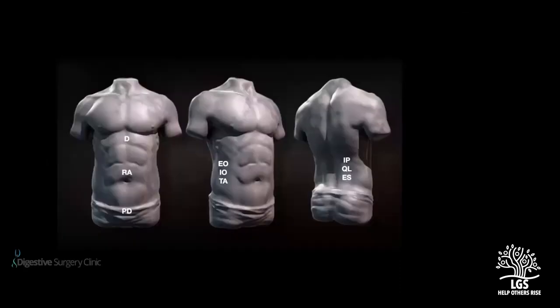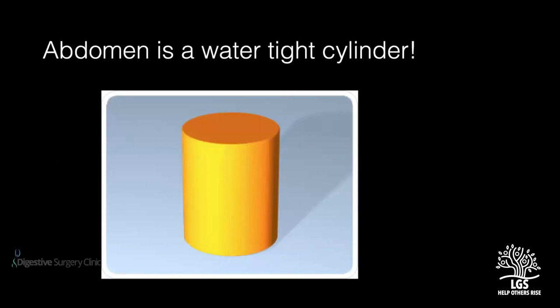Looking at pictures of the abdomen: in the front we find paired rectus abdominis muscles, limited above by the diaphragm and below by the pelvic diaphragm (labeled D and PD). On the sides there are trilaminar muscles — external oblique, internal oblique, and transversus abdominis (EO, IO, and TA). Posteriorly, the abdomen has iliopsoas, quadratus lumborum, and erector spinae, along with the spinal column. In this manner, the entire abdomen is like a watertight cylinder. Nature provides this watertight cylinder because the functions of the abdominal wall — breathing, coughing, sneezing, defecation, urination — all require a rise and fall in intra-abdominal pressure.